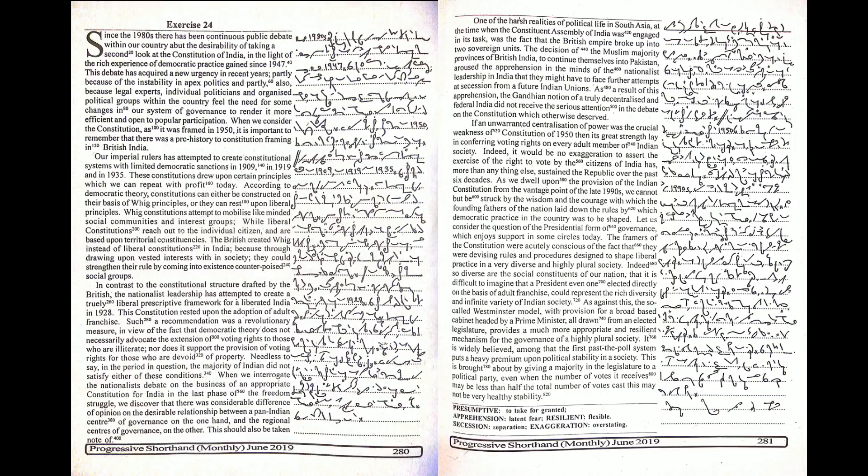According to democratic theory, constitutions can either be constructed on the basis of Whig principles or they can rest upon liberal principles. Whig constitutions attempt to mobilize like-minded social communities and interest groups while liberal constitutions reach out to the individual citizen and are based upon territorial constituencies.